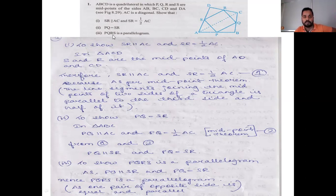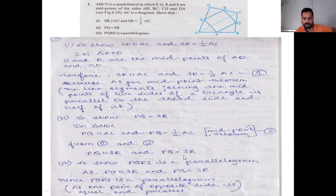SR is equal to half of AC and PQ is equal to half of AC, so by Euclid's axiom PQ is equal to SR. Therefore PQRS is a parallelogram, since PQ is parallel to SR and PQ is equal to SR — one pair of opposite sides is equal and parallel.